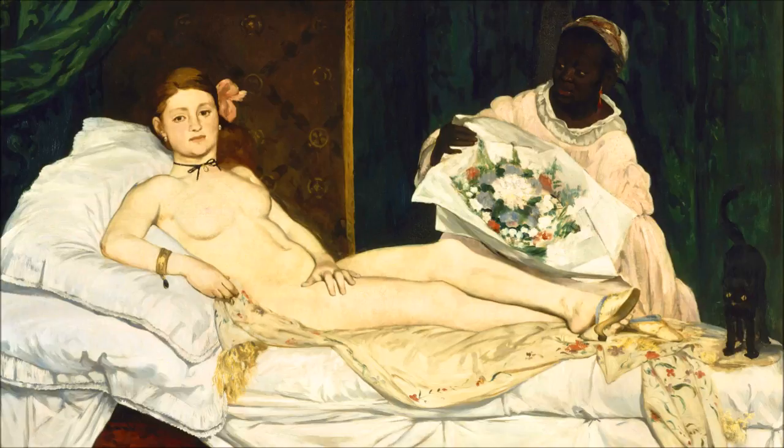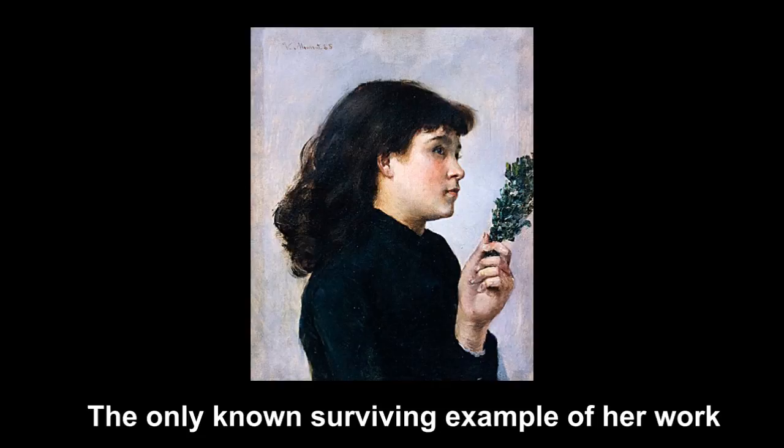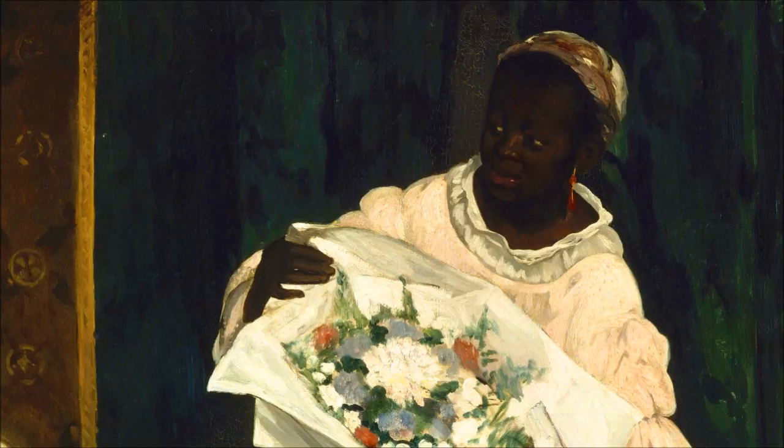One last thing to cover about this painting is the models, who are familiar to us. The white woman was used previously in Manet's Luncheon on the Grass. Her name is Victorine. She was used by multiple artists as a model, and she was an artist herself — she did paintings and even got into the salon at times when Manet didn't, so she was a very talented artist. The other woman, the black woman, was also a model. Her name was Laura.